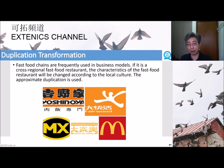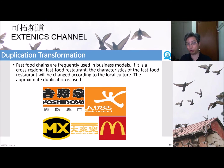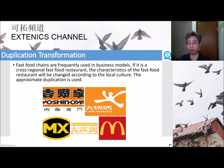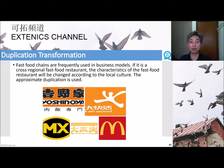Another example: fast food chain restaurants are frequently used in this business model. If it is a cross-regional fast food chain restaurant, the characteristics of the restaurant will be changed according to the local culture. This type of duplication we call an approximate duplication.